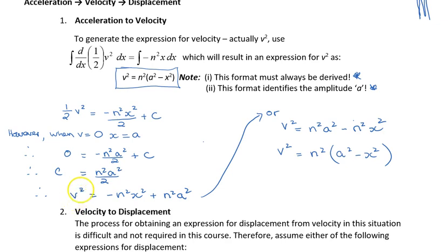We can then substitute for our constant and multiply every term by two. I've done the two things in one go: multiply everything by two to remove the half there, the two there, and the two there. And we get v squared is minus n squared x squared plus our constant.